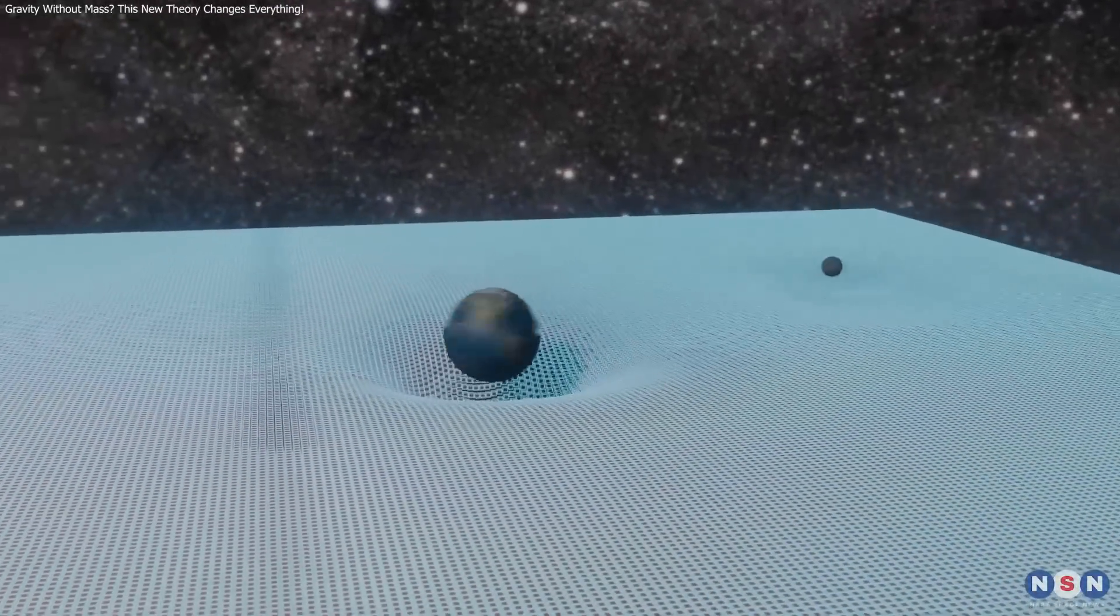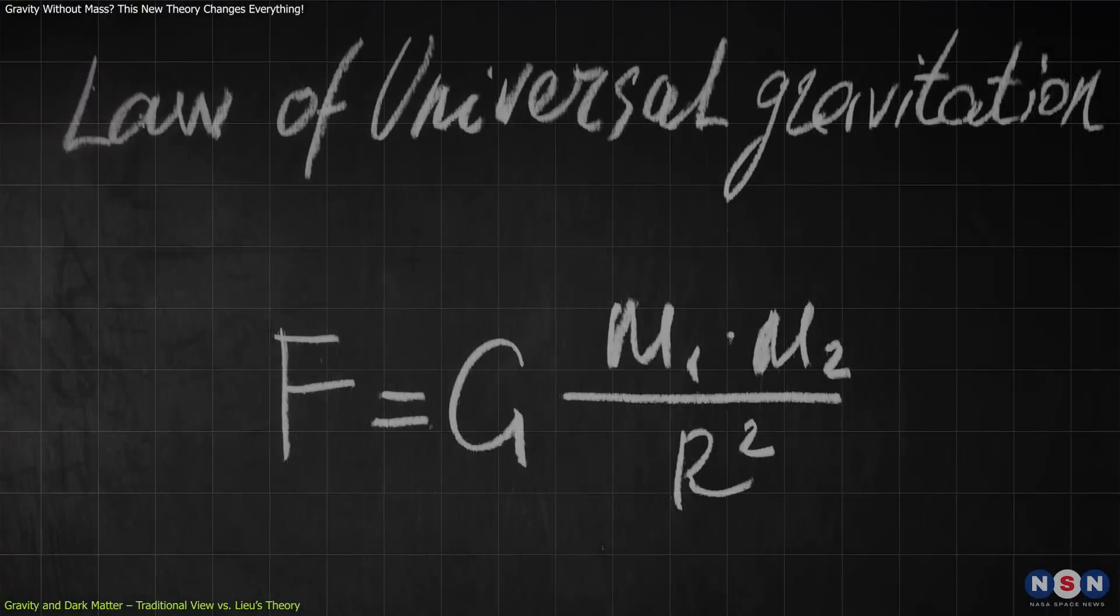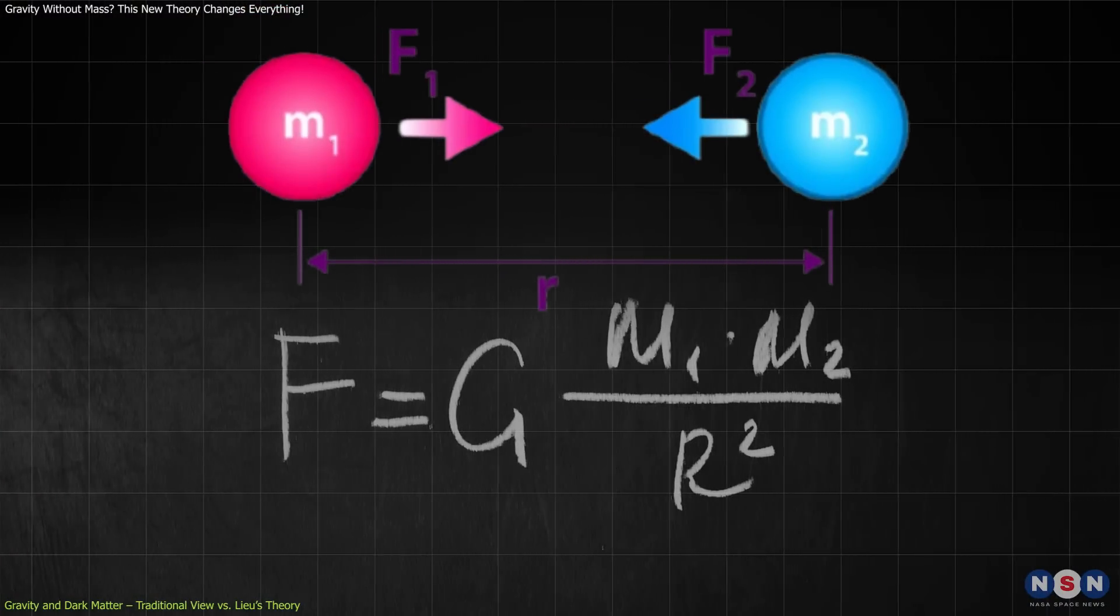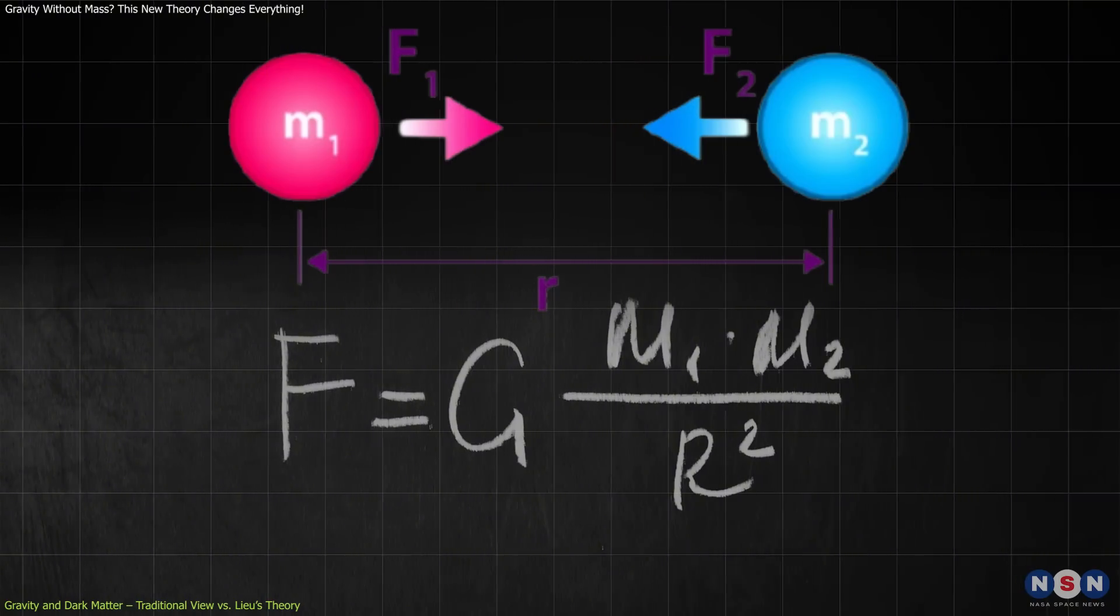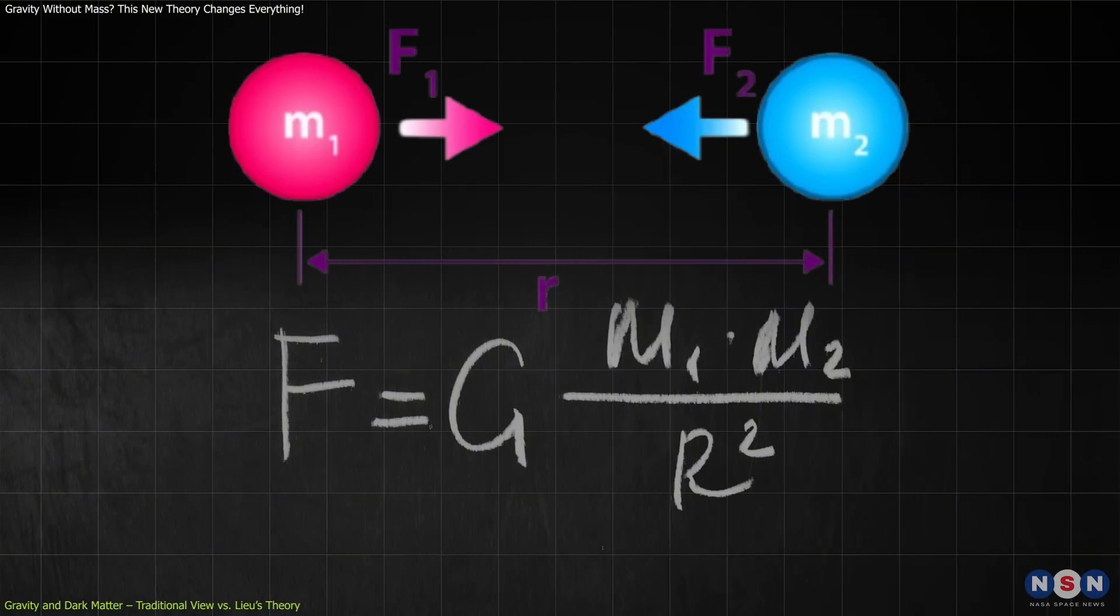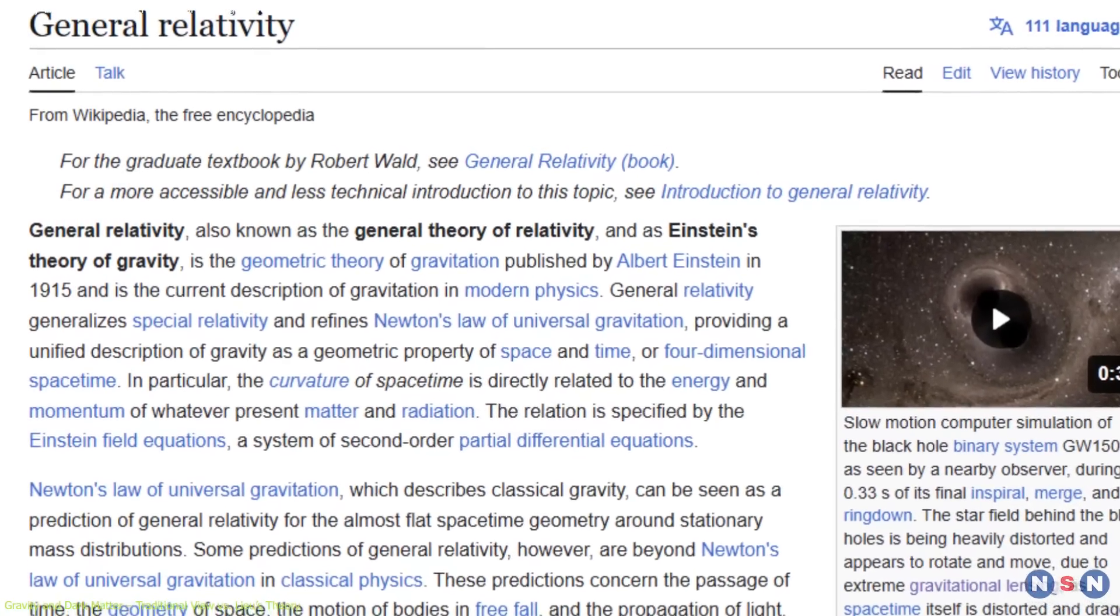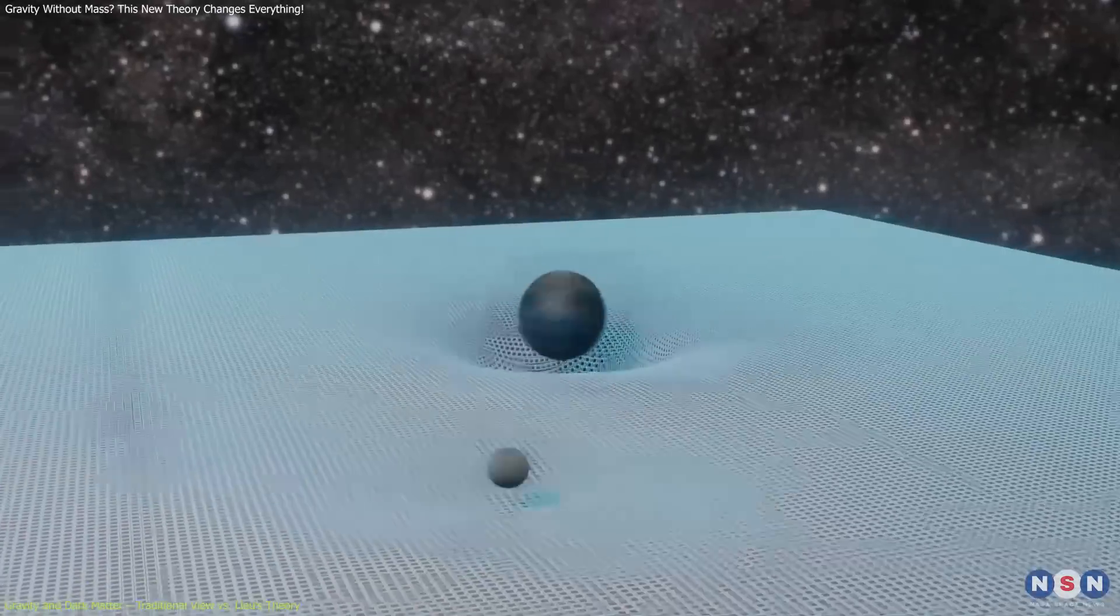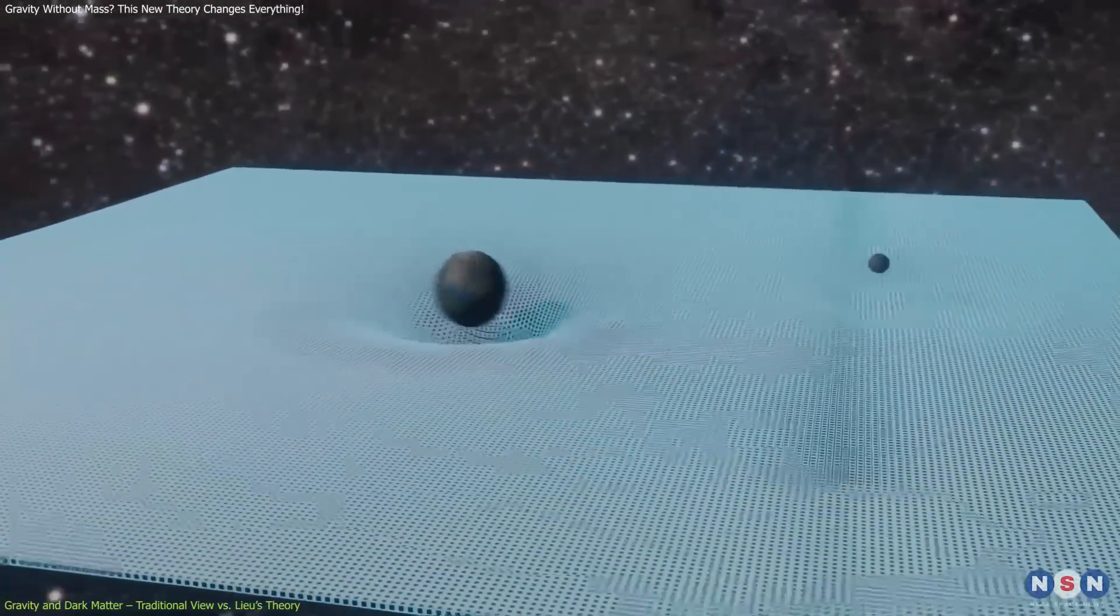Traditionally, gravity is understood as a force arising from mass. Isaac Newton's law of universal gravitation describes it as an attractive force between two masses, proportional to their masses and inversely proportional to the square of the distance between them. Albert Einstein's general theory of relativity further refined this understanding by describing gravity as the curvature of spacetime caused by mass and energy.